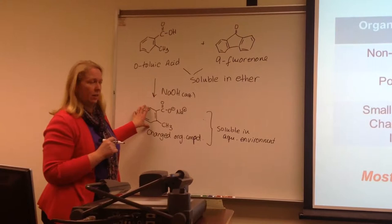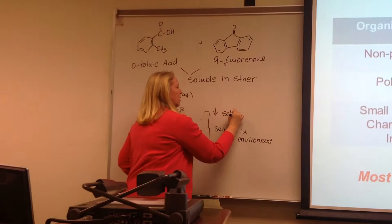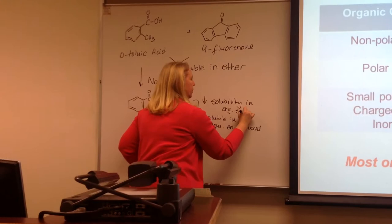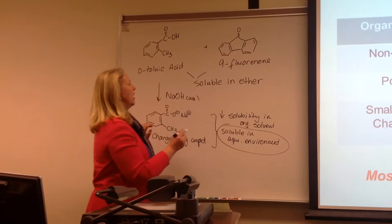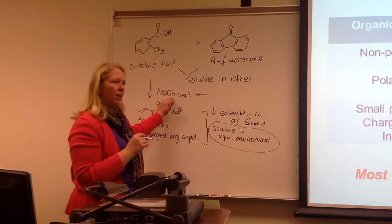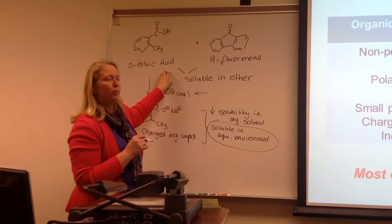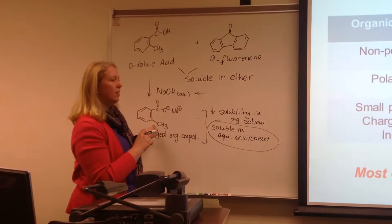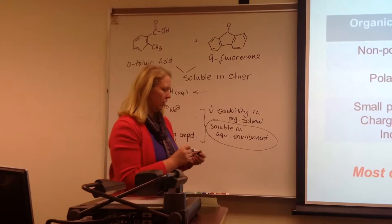We decrease the solubility of this compound in an organic solvent and increase the solubility in the aqueous environment. Instead of just adding base to ether, we're going to use a one molar solution of sodium hydroxide and mix it with the ether that these compounds are dissolved in. From mixing the solvents, we'll be able to transfer enough NaOH to get the toluic acid in contact with the sodium hydroxide, deprotonate that proton, and make this carboxylate salt.